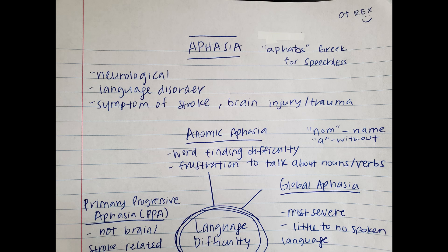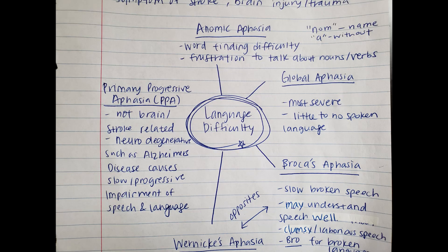Aphasia — I like to break down the terminology. The Greek word aphatos means speechless. When we think aphasia, we are thinking about different language disorders that are neurological, and it causes difficulty with speech, writing, and understanding language, depending on what kind it is. Typically this is a symptom of a stroke, a brain injury, or some form of trauma to the brain. I'm going to break down some of the most common language difficulties that arise and the types of aphasia.